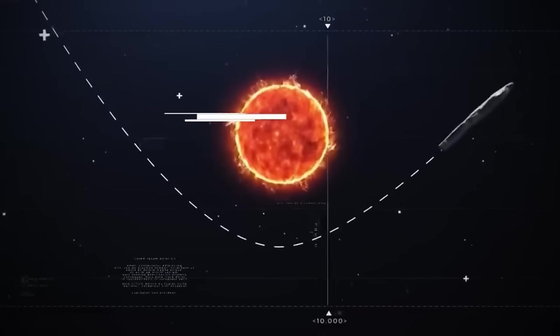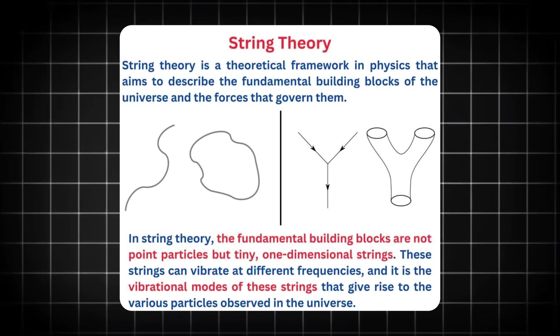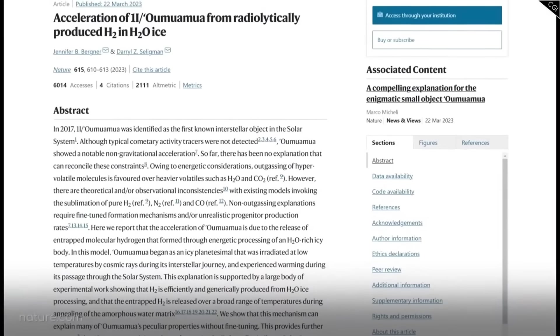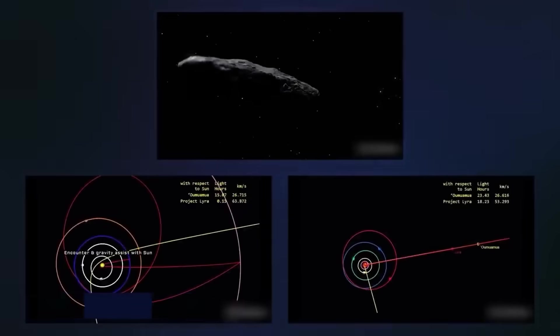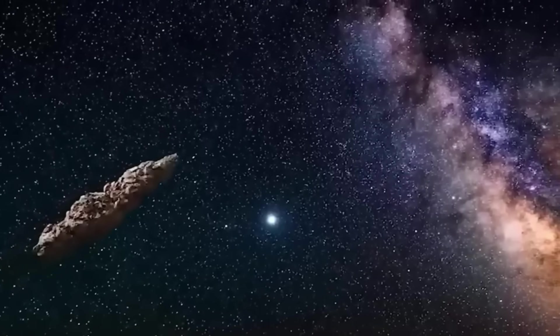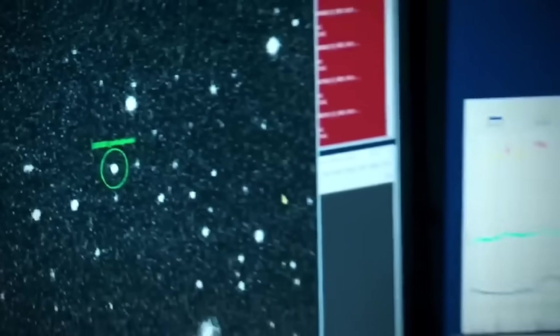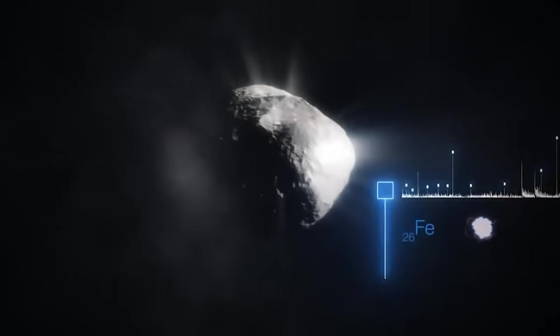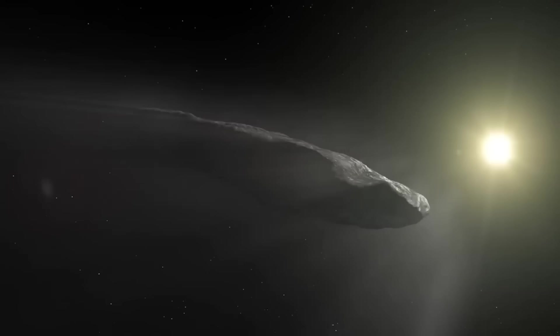Let's step back and understand why Oumuamua captivated scientists from the moment of its discovery. On October 19th, 2017, the Pan-STARRS telescope in Hawaii detected a faint moving point of light that quickly proved extraordinary. Named 1I/Oumuamua, meaning scout or messenger from afar, in Hawaiian, it was confirmed as the first interstellar object ever observed in our solar system. Its hyperbolic trajectory proved it came from another star entirely and was just passing through. What made astronomers take immediate notice was its extreme speed, racing along at nearly 200,000 miles per hour, 87 kilometers per second, far faster than typical asteroids or comets in our neighborhood. As telescopes worldwide tracked it, Oumuamua revealed even more puzzling traits.